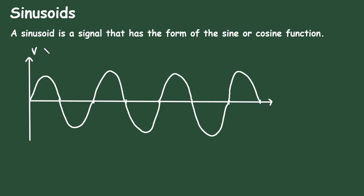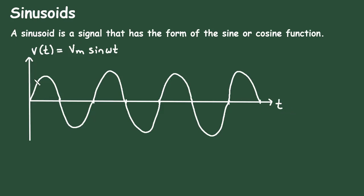Let us say it is V of t and it is equal to Vm sin omega t. Here Vm is the maximum voltage, omega is the angular frequency, and t is the time. On this x-axis this is time t, and here this will be Vm, that is the maximum voltage.